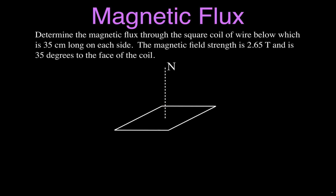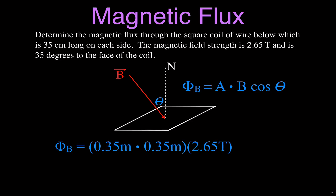In the next problem, the magnetic field comes in at an angle of 35 degrees to the face of the coil. We use the same equation and make sure theta is the angle between the normal line and the magnetic field — not the angle to the face itself, similar to Snell's law in optics. We multiply the side lengths and the magnetic field strength, then take the cosine of 35 degrees. The result is slightly less: 0.72 Weber.